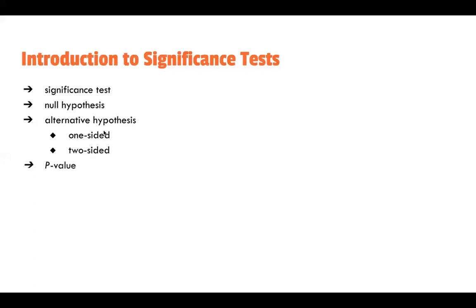Another important definition is the p-value, which is basically a probability value. The official definition is that it's the probability, assuming the null hypothesis is true, that a certain statistic would be as extreme or more extreme than the one that was observed. We'll get into interpreting it in a bit with an example, but first we need to interpret the null hypothesis itself.